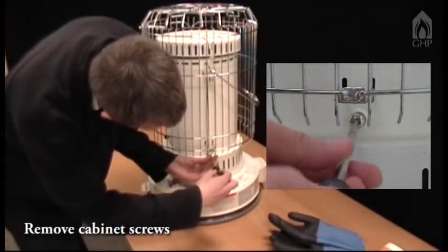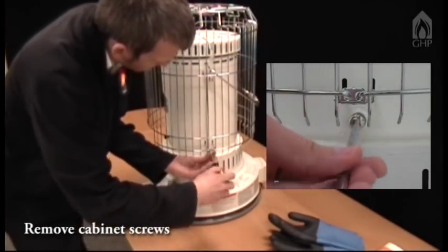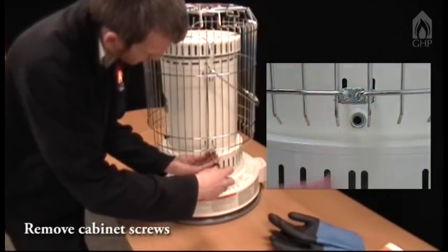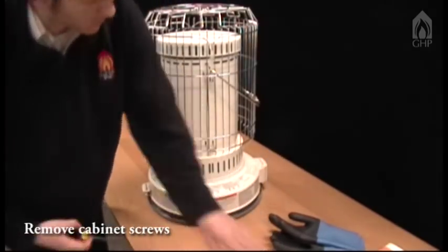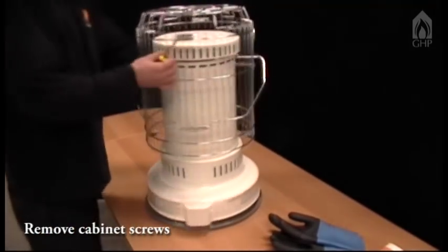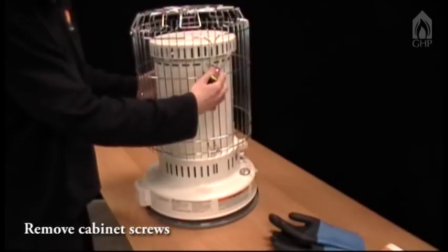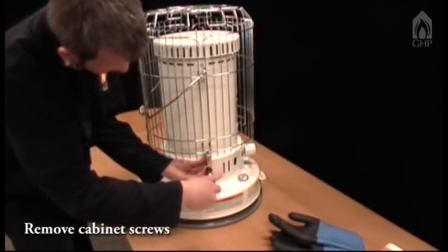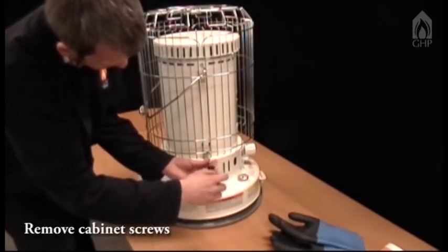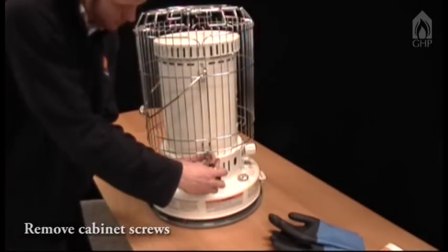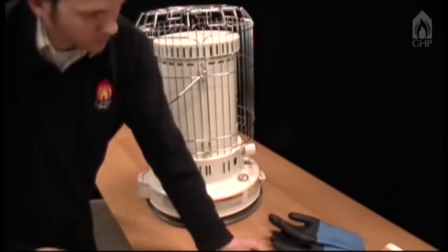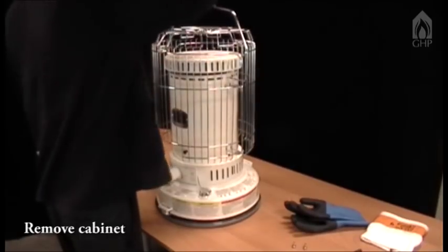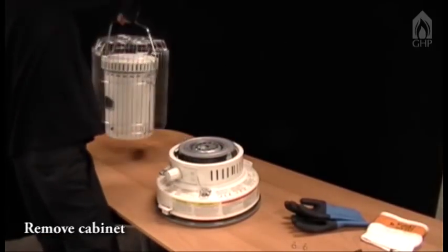Use a screwdriver to loosen and remove cabinet screws on either side of the heater cabinet. Use the carrying handle to lift the cabinet straight up and away from the heater.